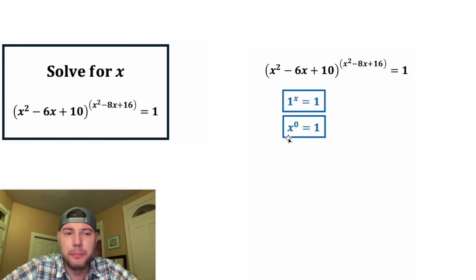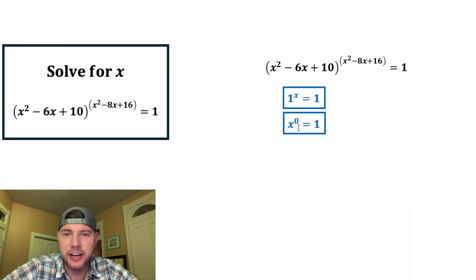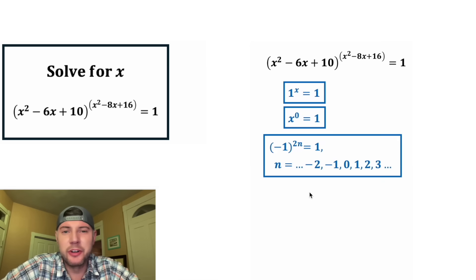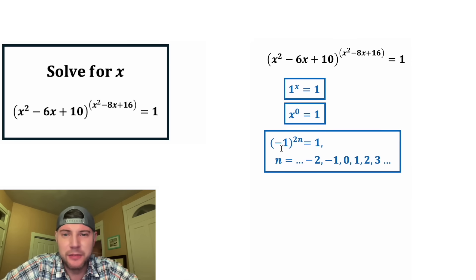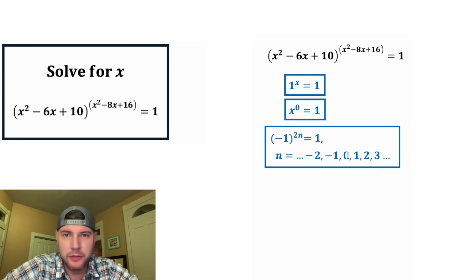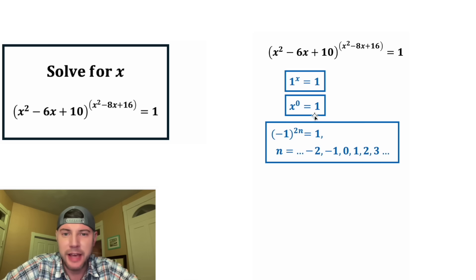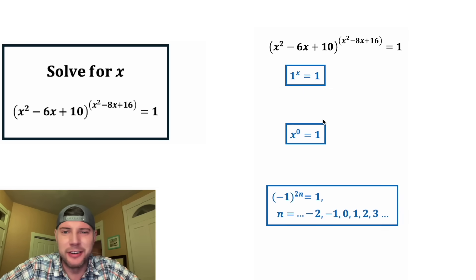For the second case, our base isn't going to matter as long as our exponent is 0 will be equal to 1. And for the third scenario, if our base is negative 1 and our exponent is a positive or negative even number, that will equal 1. So let's look at all three scenarios.